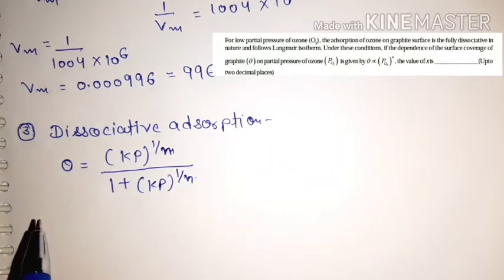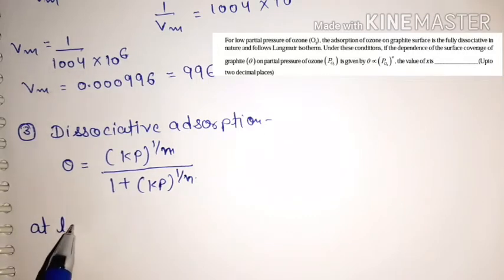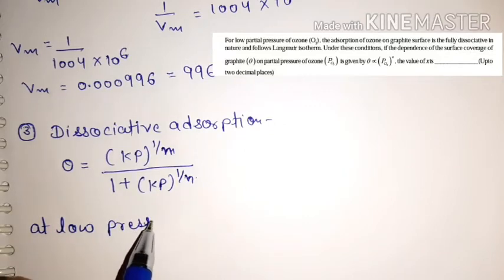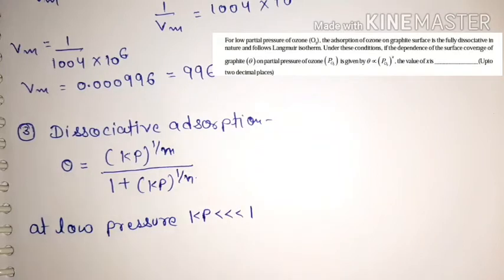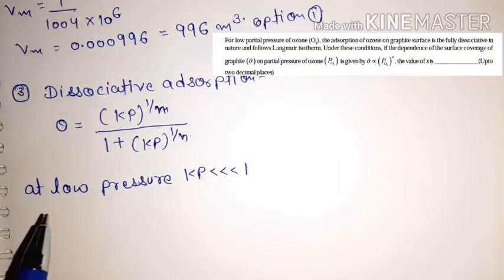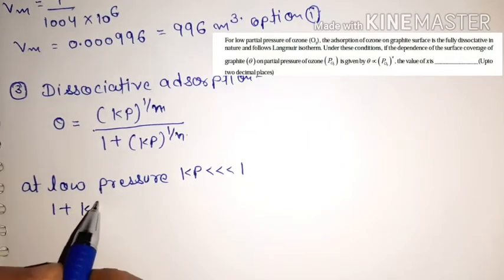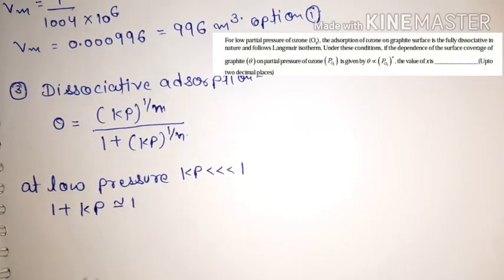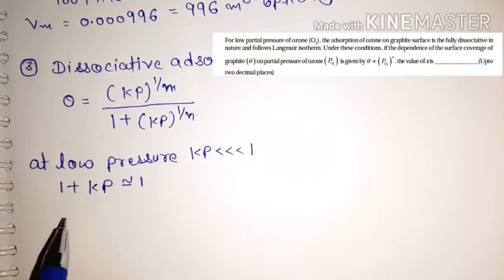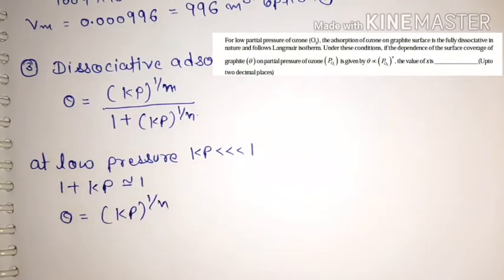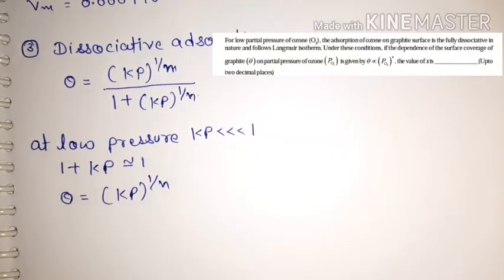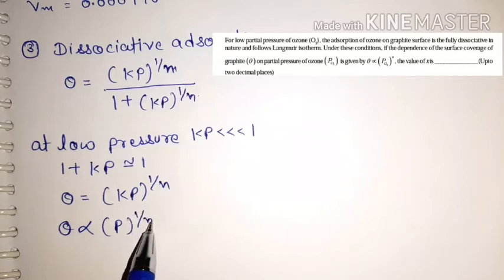At low partial pressure, the value of Kp is much less than 1. When this happens, 1 + Kp becomes approximately equal to 1. Under this condition, θ becomes equal to K·p^(1/n), meaning θ is directly proportional to p^(1/n).